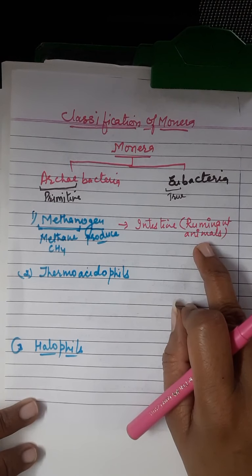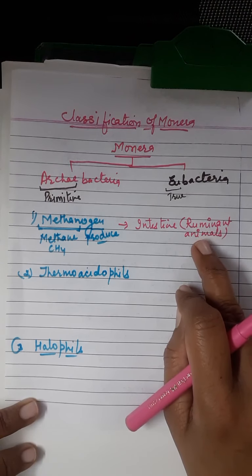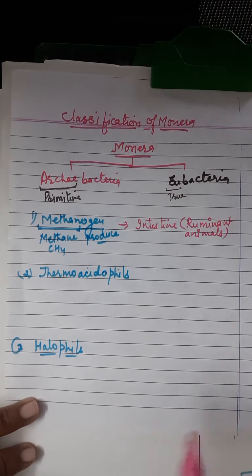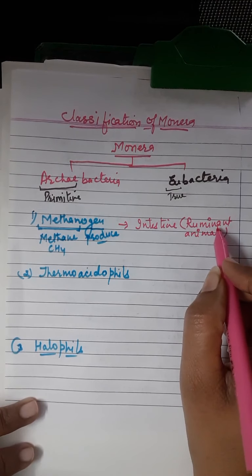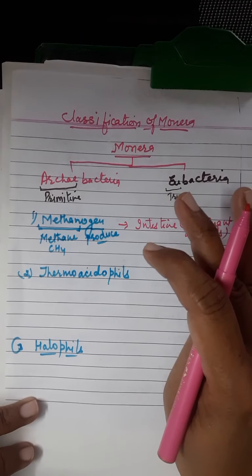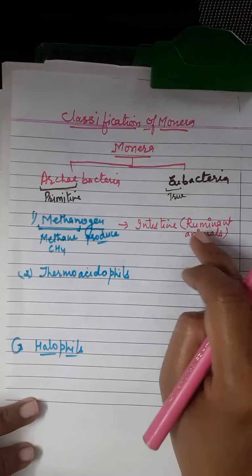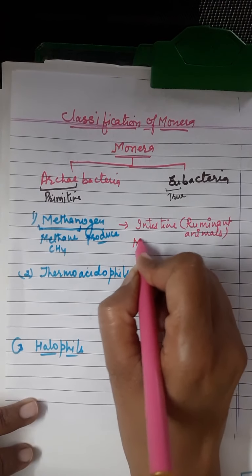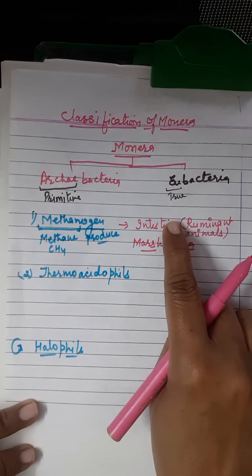Ruminant animals are cud-chewing animals — like cows and goats — which eat food, then sit and re-chew it by regurgitating it back from the stomach. They have a special stomach with four partitions: rumen, reticulum, omasum, and abomasum. Methanogens are also present in marshy areas as symbiotic bacteria, they produce methane and live in anaerobic conditions.